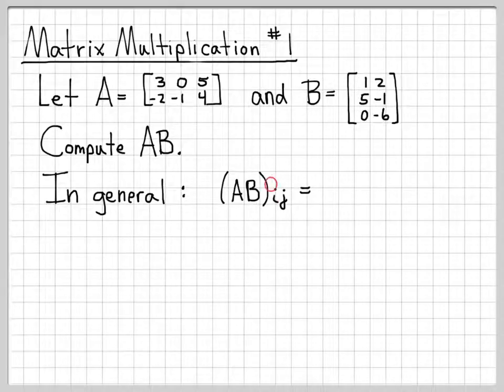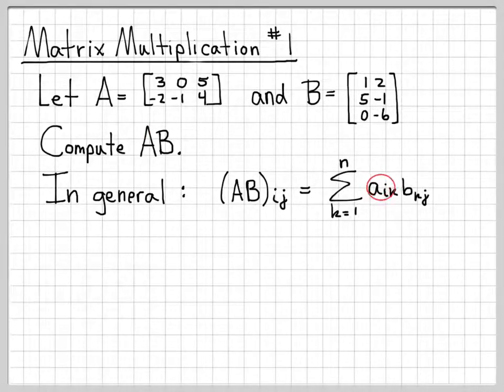Which says that I can compute the ijth entry of the product AB, so by i, j, we mean row i, column j. So I can compute one entry in this final matrix by doing the following computation. A sub i, k is the row i, column k entry of the matrix A.